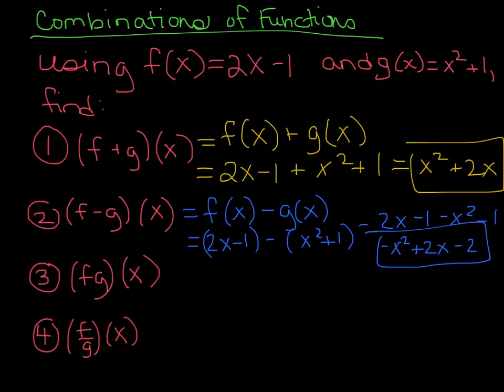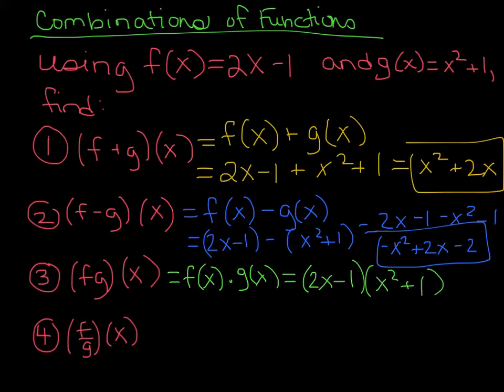Multiplication is pretty much the same idea. You can rewrite this as f(x) times g(x). From there, you can multiply these out using the FOIL method. When you do that, your final answer will be 2x³ - x² + 2x - 1.